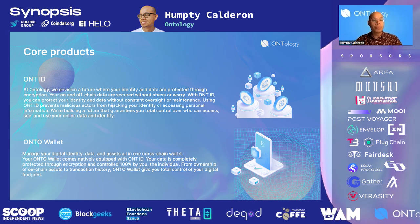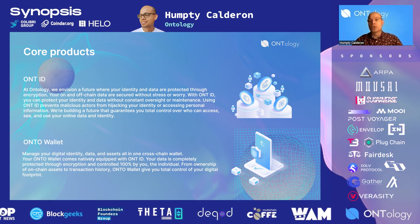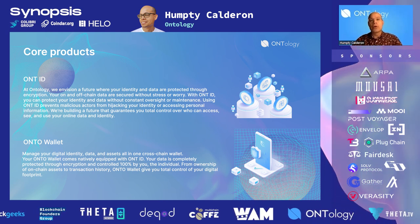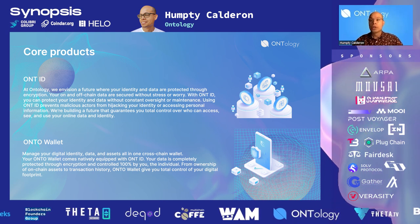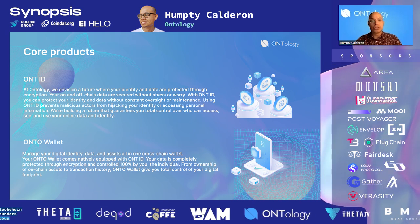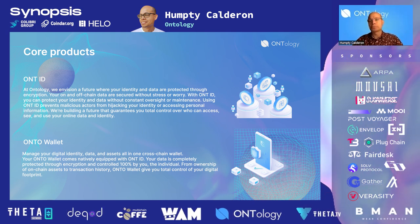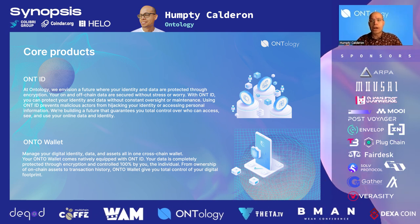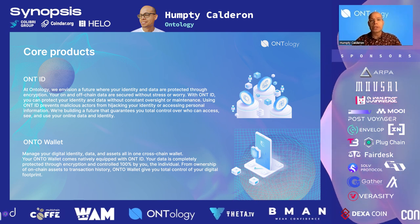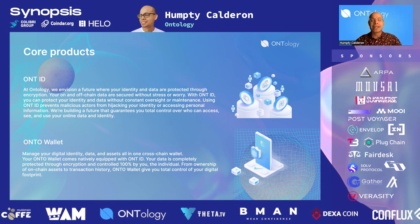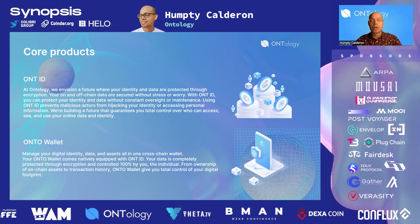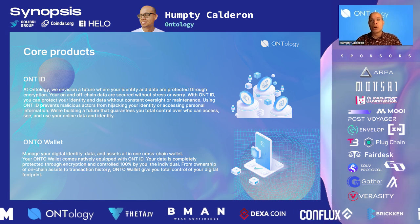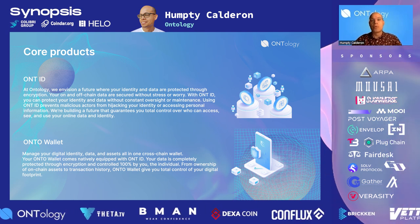Another product that Ontology has built is called Onto Wallet. Onto works like most wallets that you may already be familiar with, where you can hold and manage digital assets and interact with dApps. The key difference is that it enables you to own your identity right off the bat. So as soon as you create a wallet, you actually create a decentralized identity as well, which allows you to start building your Oscore or reputation on that wallet.